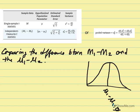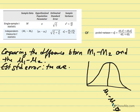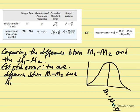We take our two samples as representations of the populations and compare those differences. Our estimated standard error, similar concept, is an average difference — but instead of being the average difference between m and mu, the estimated standard error represents the average or expected difference between m1 minus m2 and mu1 minus mu2. If we take the two populations — which are equivalent to one another — and take one minus the other, it would equal zero.